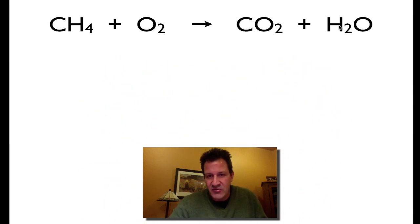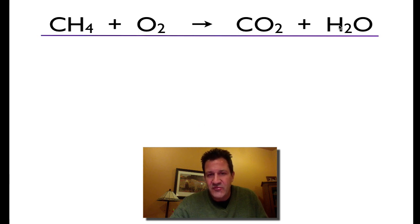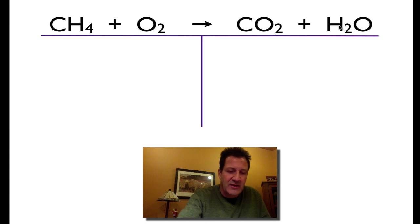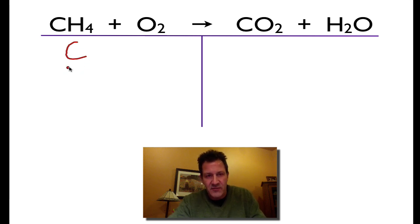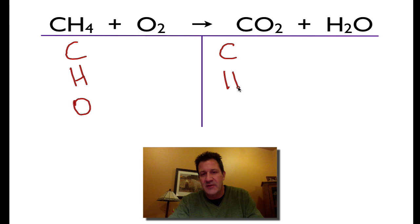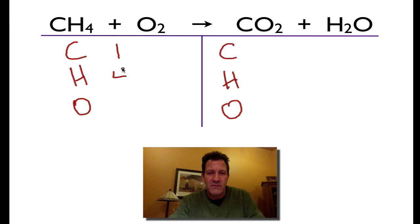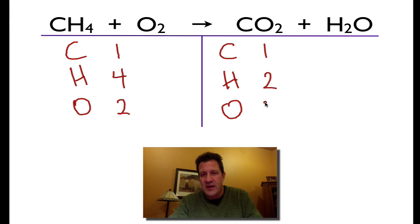These are the steps I think you should follow. It's not really just a guess and check — if you follow this systematic process, it works out better. Draw a line under the equation, draw a line down the center, and now we have a little table where we can tally up the elements on the left and right-hand side. We have carbon, hydrogen, and oxygen on the left, and the same elements on the right. The counts are: left side — one carbon, four hydrogen, two oxygen; right side — one carbon, two hydrogen, three oxygen.